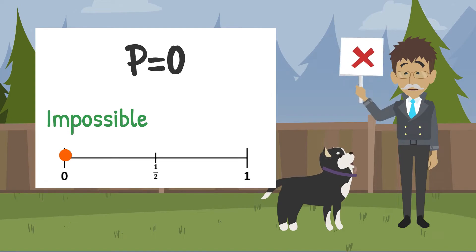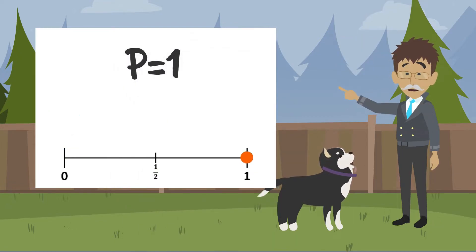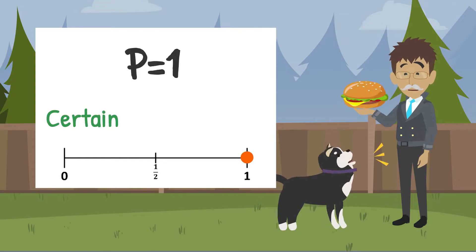This event has a probability of 0 and is impossible. An event with a probability of 1 is said to be certain. Random wanting a bite of cheeseburger is certain and has a probability of 1.